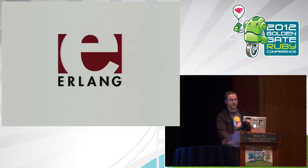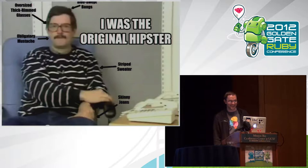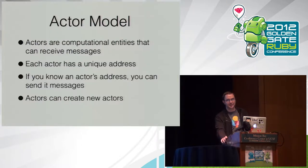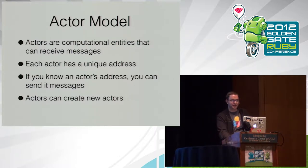I was a huge fan of Erlang. I think those guys were really into concurrency before it was popular and pioneered a lot of really good techniques for building concurrent programs. The actor model might sound kind of scary, but it's really simple. Basically, you have these actors. Each one has an address you can use to talk to them. If you know the address, you can send them messages, kind of like a postal address. And then actors can create new actors.